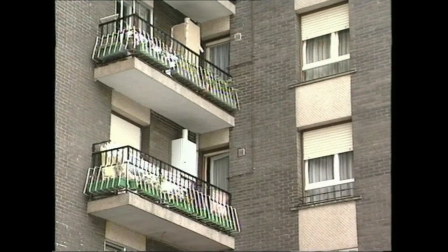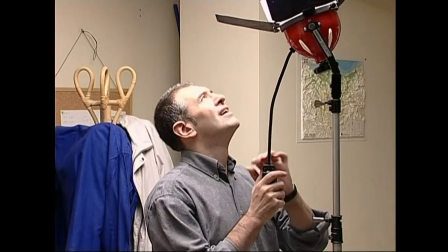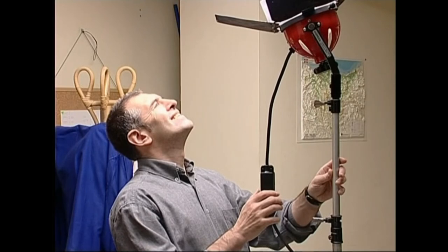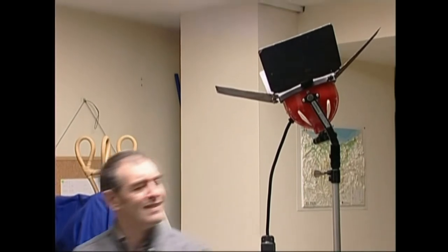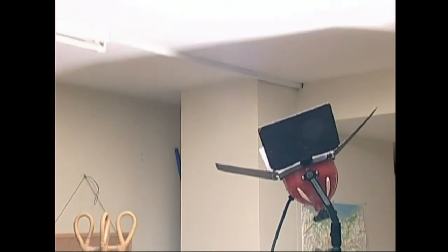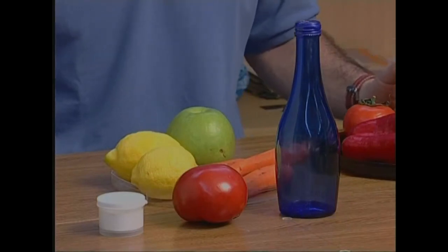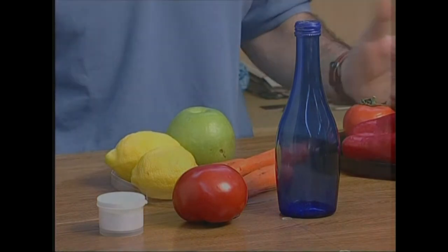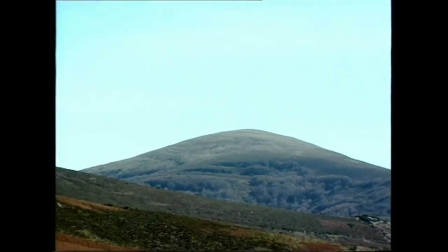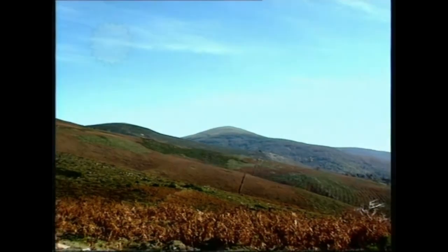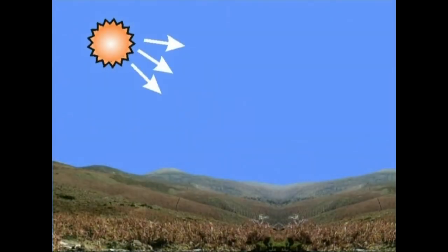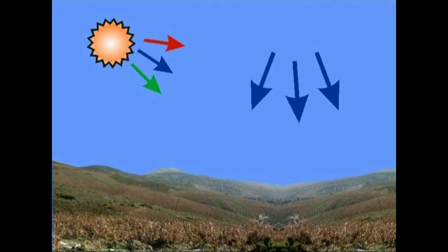Argiaren sakabanaketa dela medio, egun lainotu batzuetan ez da apena itzalik izaten. Argi foku bat gelaren sabairantz zuzentzen badugu, antzeko efektua lortuko dugu: argi iztapena nahasiagoa da eta kasik ez da itzalik. Sakabanaketaren efektuaren beste ondorio bat, egun oskarbietan gertatzen dena da: alako egunetan, zeru aldea urdina gertatzen da, eguzkiaren argi izpi gorri eta berde geienak aireak surgatzen dituelako.